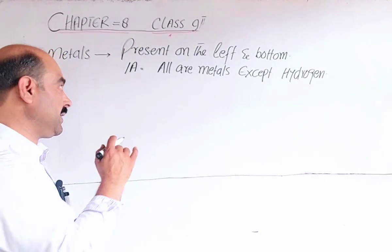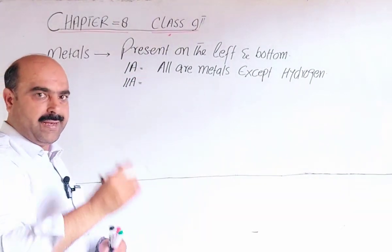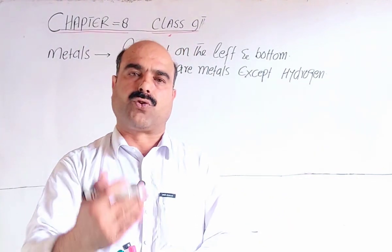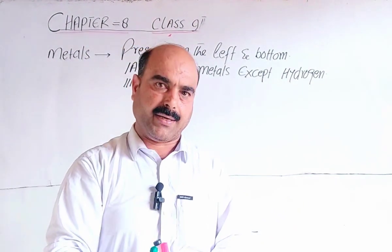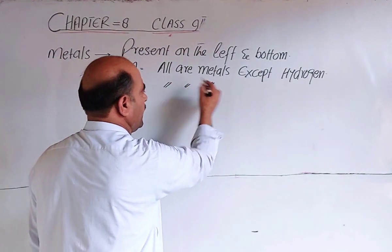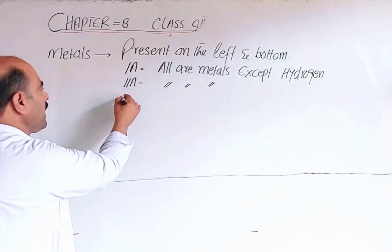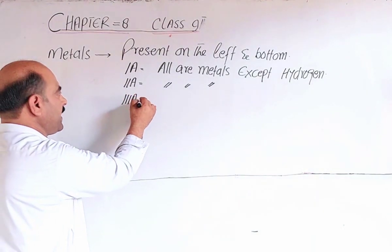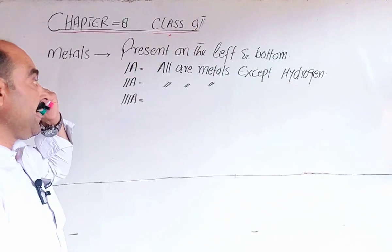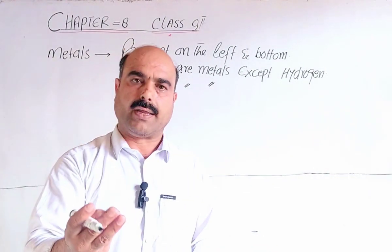Group 2 elements include beryllium, magnesium, calcium, strontium, barium, and radium — all are metals. Group 3 of the periodic table: all elements are metals, except boron. Boron is a non-metal.